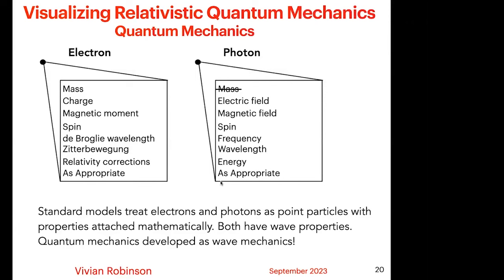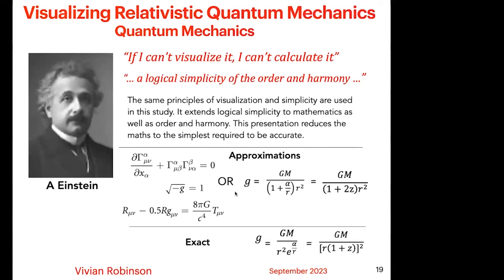The problem was that people didn't know anything about the structure of an electron. They didn't know much about what a photon was, or they just ignored Maxwell's suggestions. It became fashionable for quantum mechanics specialists to describe them as point particles with properties attached. They could then manipulate them quite easily and get a match — but did it really have any bearing with reality? So what I'm going back to is: if I can't visualize it, I can't calculate it. There's a sort of logical simplicity of order and harmony, and I suggest this presentation reduces the maths to the simplest possible.